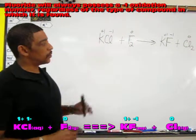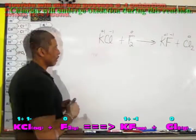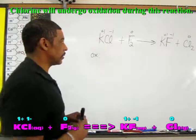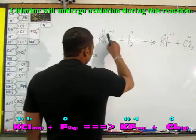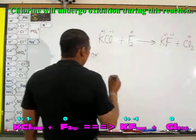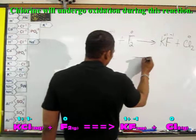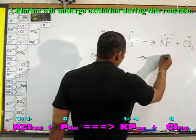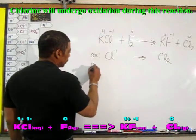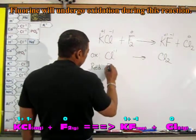Now, let's write the two half reactions involved in this process. The oxidation half reaction will involve the element whose oxidation number increased. Chloride begins as a minus 1 and ends at 0, so chloride will undergo oxidation in this reaction. And of course, the reduction half reaction will be the fluorine.